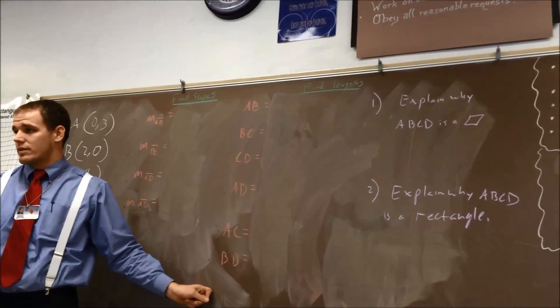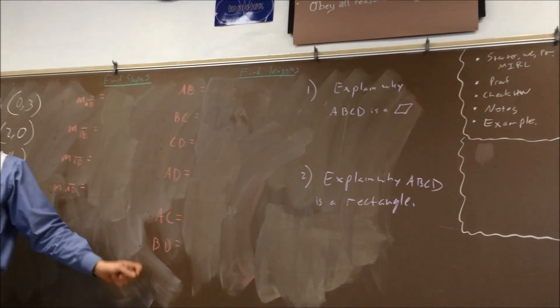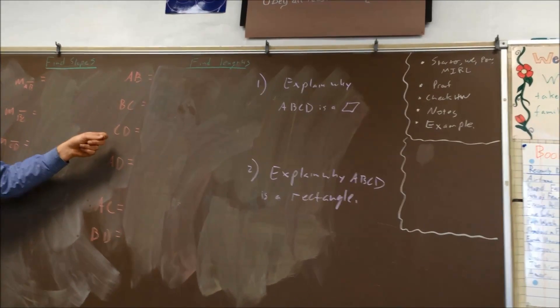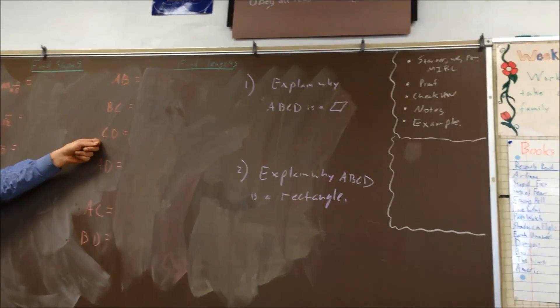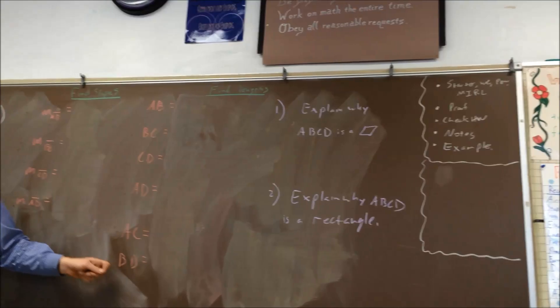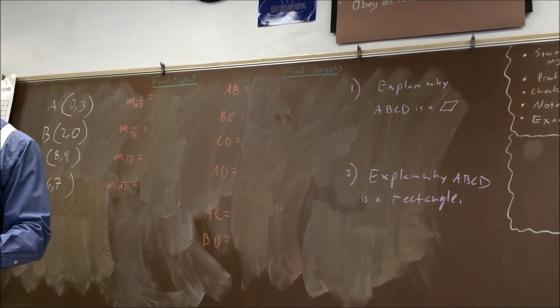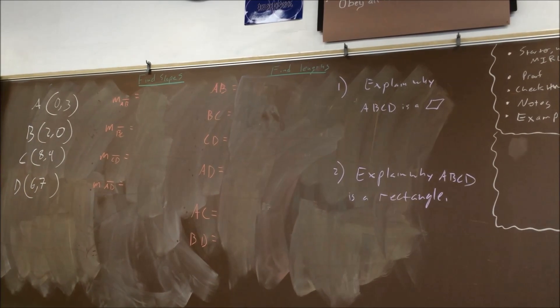Now here's what I suggest, have one person in your group do AB, have one person in your group do BC, have one person in your group do CD, then have another person do AD, AC and BD. So that way no person has to do all six of them. So split them up.